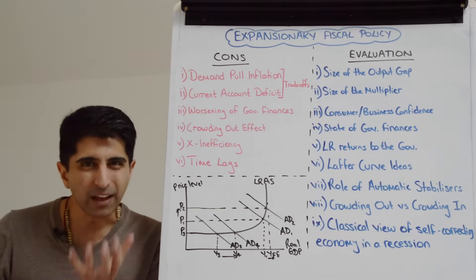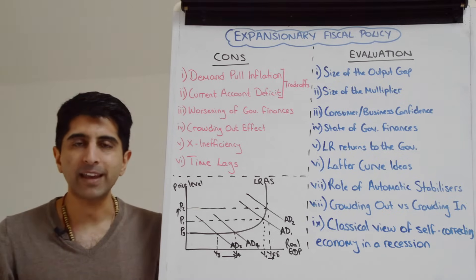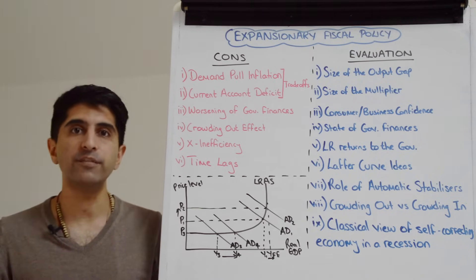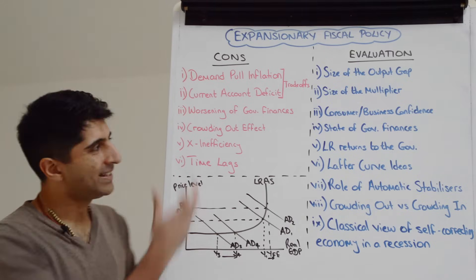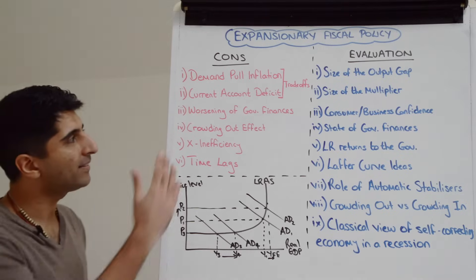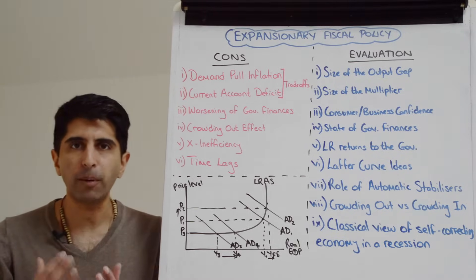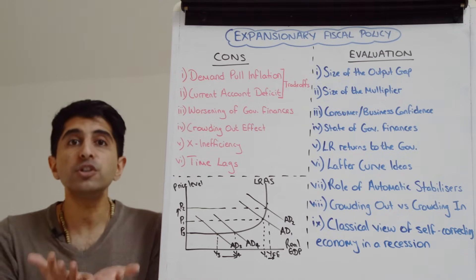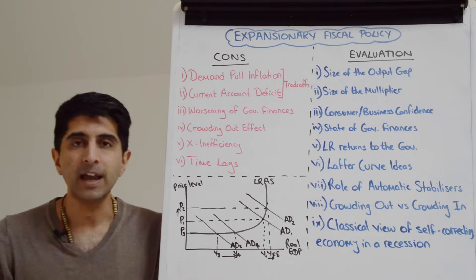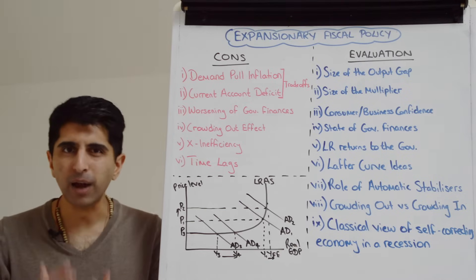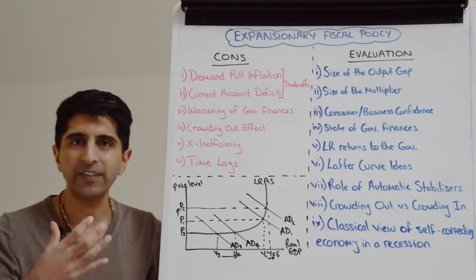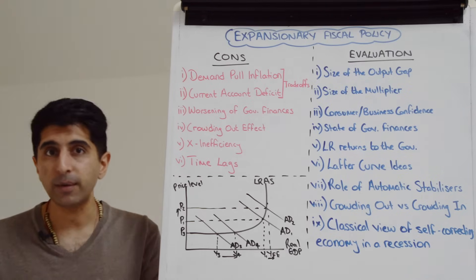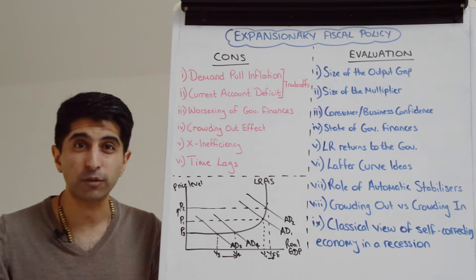We can also look at the crowding out effect. When government spending is heavily debt-fueled, it could crowd out the private sector and reduce private sector investment. Debt-fueled government spending increases demand for loanable funds in the loanable funds market, pushing up equilibrium interest rates, making it more expensive for private businesses to borrow and fund their investment.